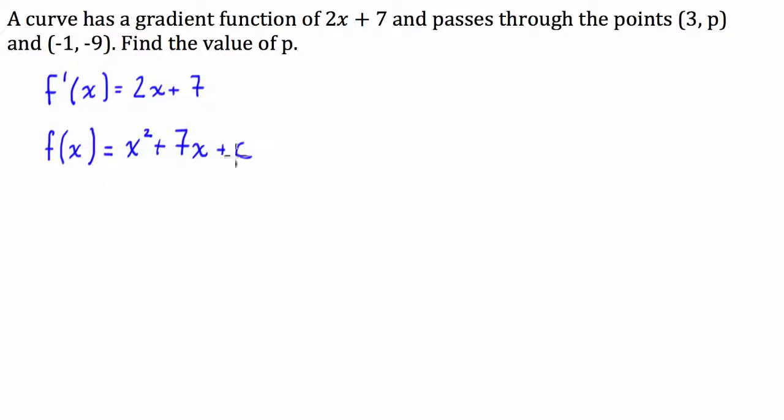So what we're going to do from here is we've got to try and figure out what c is. Now, we're going to use this point here. Negative 1 comma negative 9. So from here what we can actually say is that the function at negative 1 is equal to negative 9. So what we're going to do is we're going to input these values into this function here and solve for c.